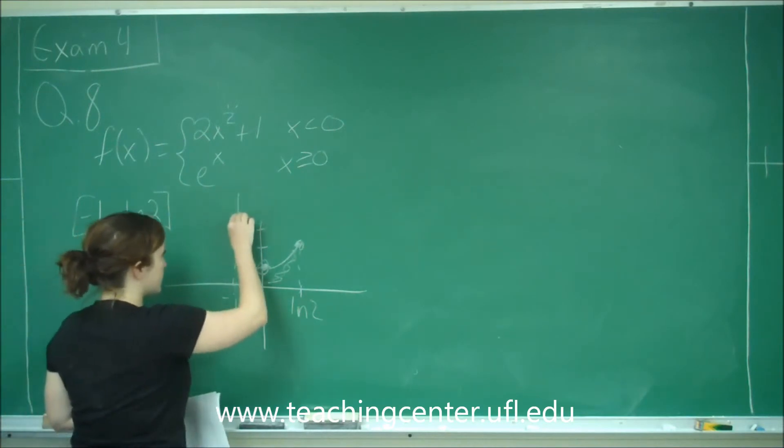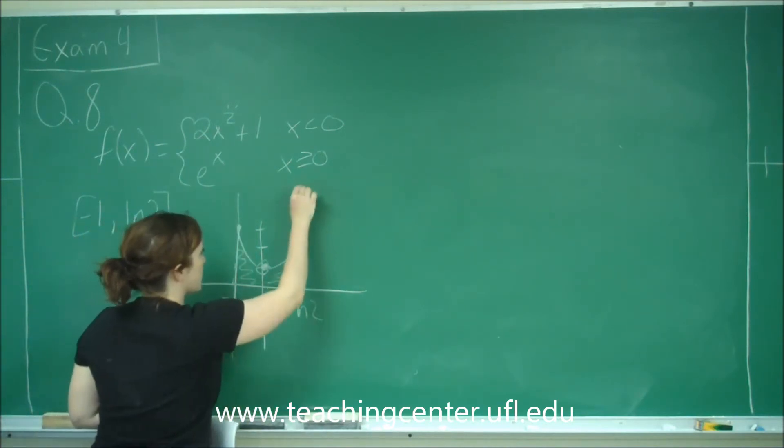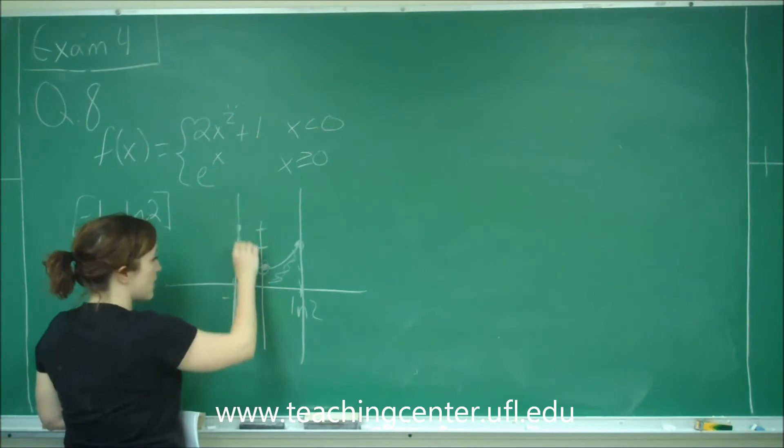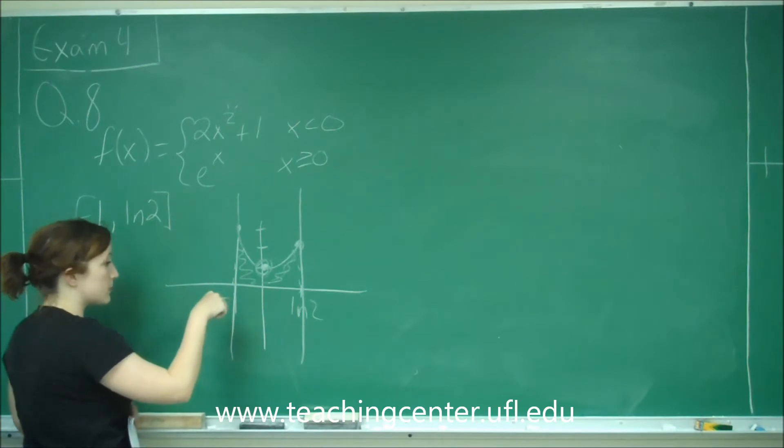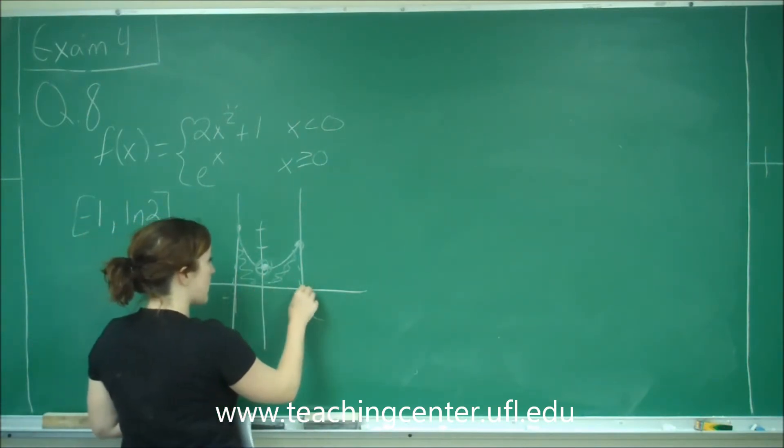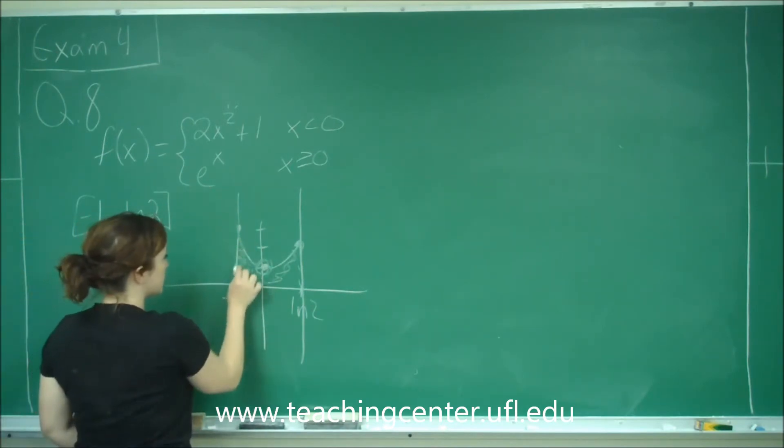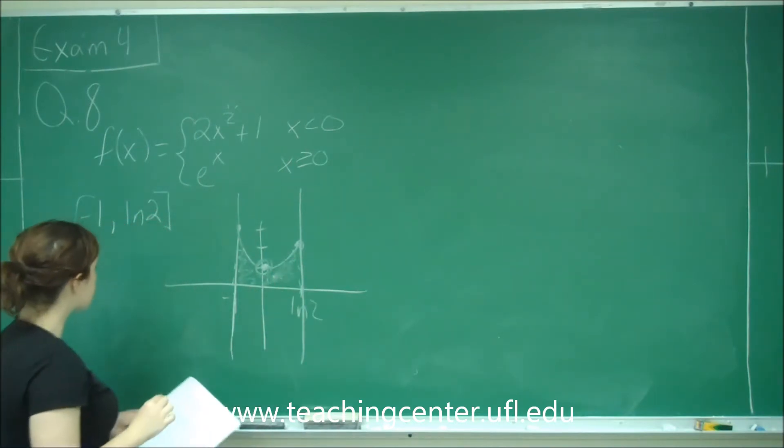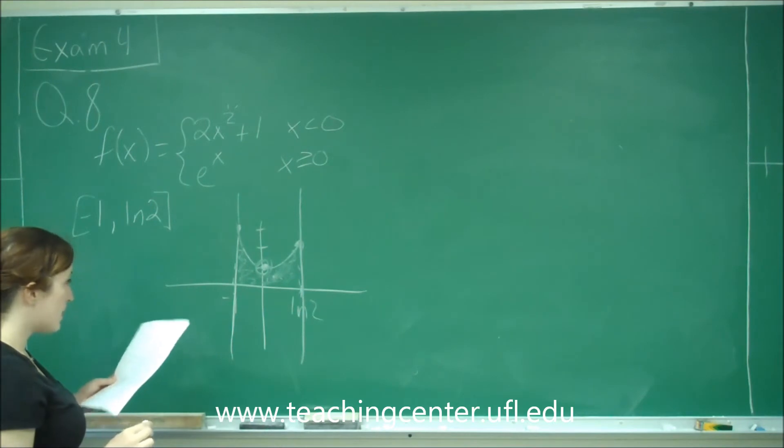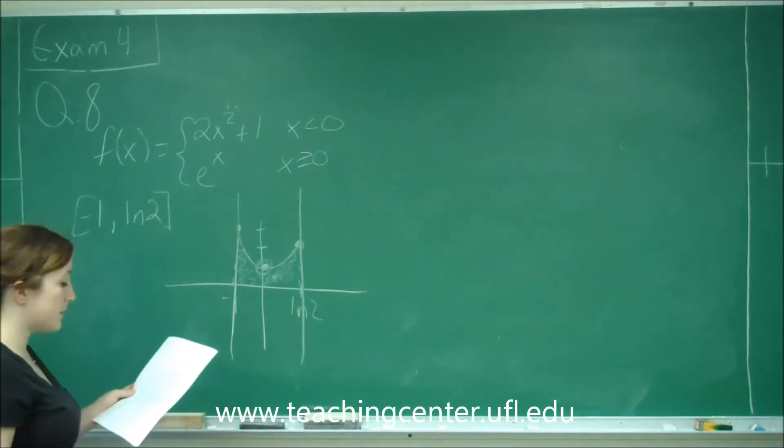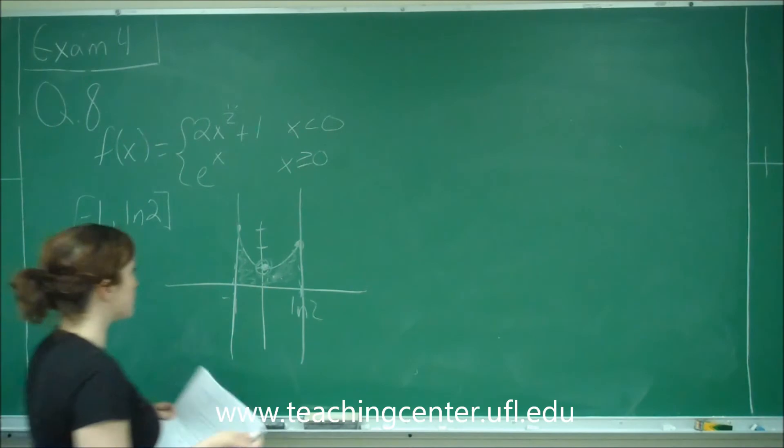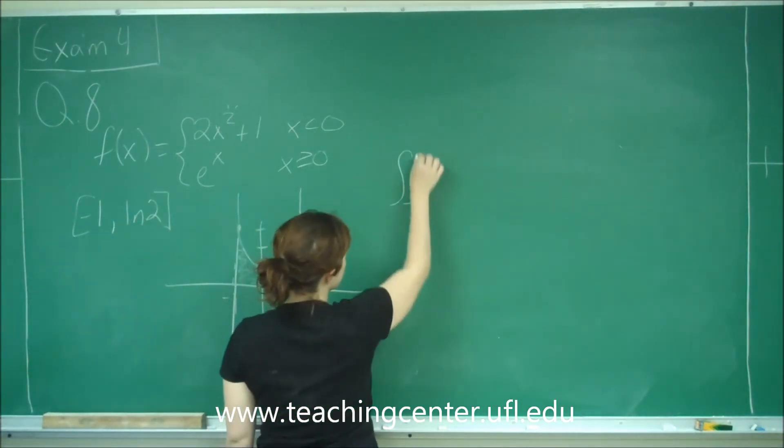So I sketched out the graph. From negative 1 to 0, where 0 has an open circle, we have our graph of 2x squared plus 1, and then from 0 to ln of 2, we have our graph of e to the x. When we're finding the area under the curve, we're going to be taking the integral of that region, breaking it up into two sections for the piecewise function. From negative 1 to 0,